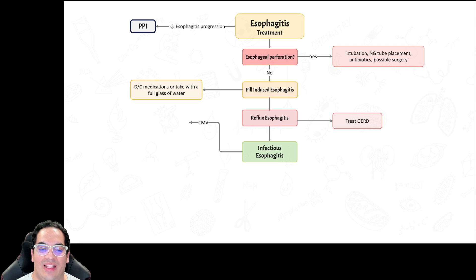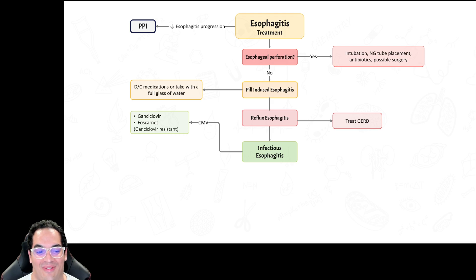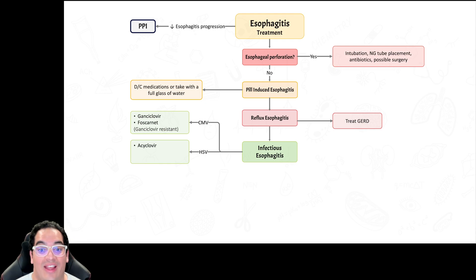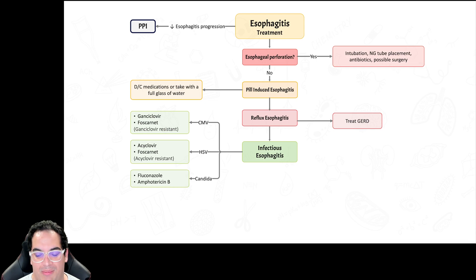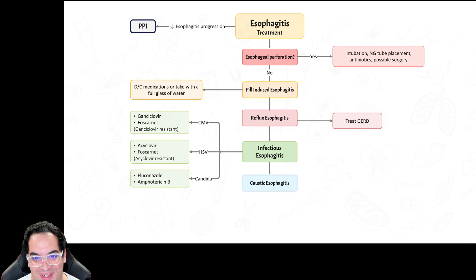For infectious esophagitis — this is high yield: if it's CMV, treat with ganciclovir; if resistant, use foscarnet. If it's HSV, treat with acyclovir; if resistant, use foscarnet. That's the purpose of the viral cultures. If it's Candida, treat with fluconazole or amphotericin B.